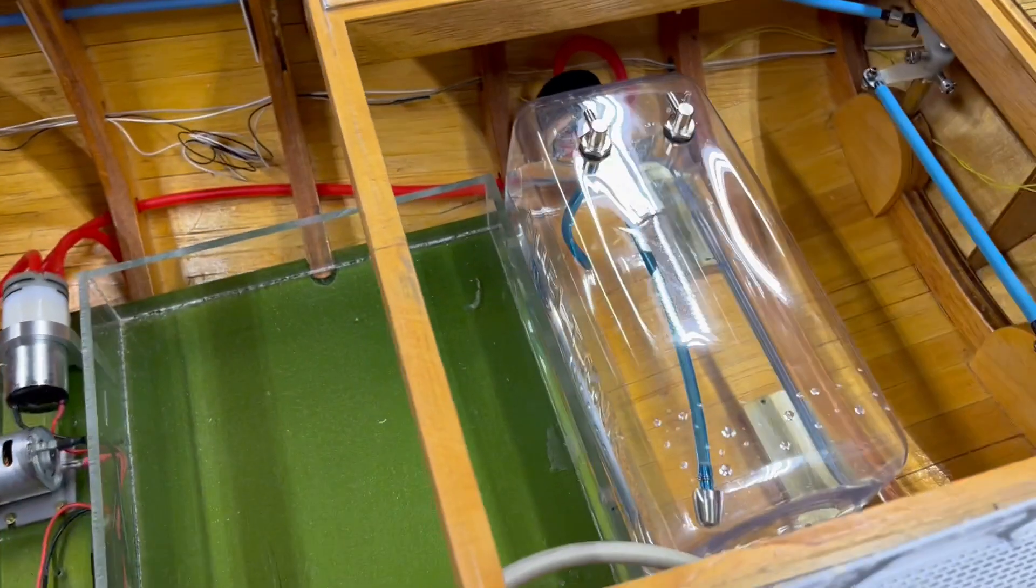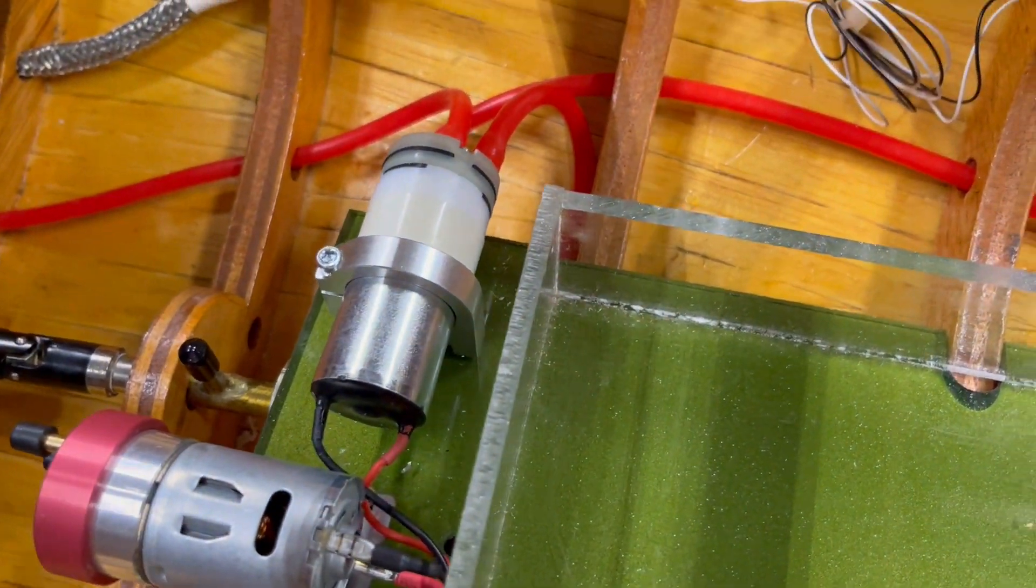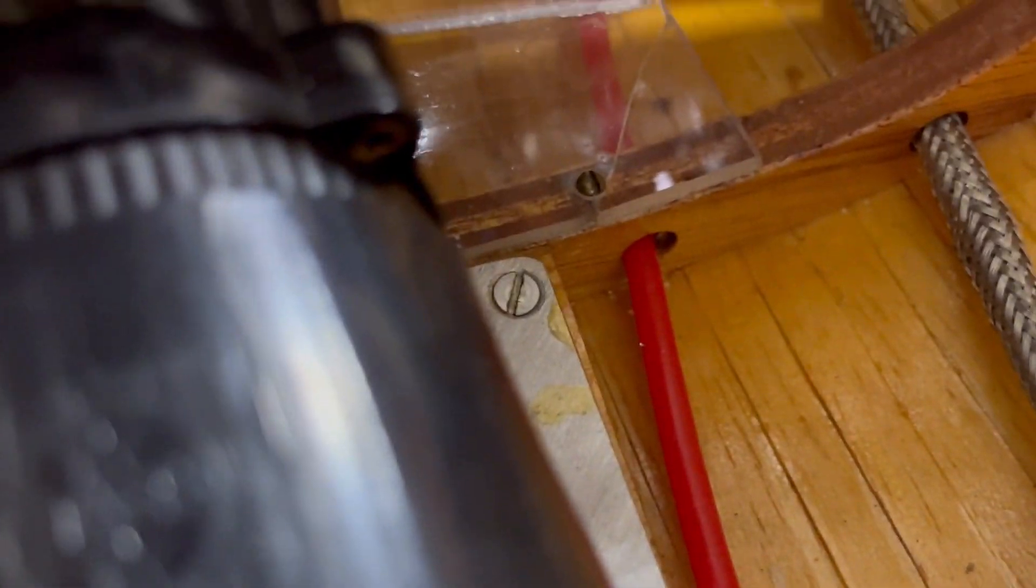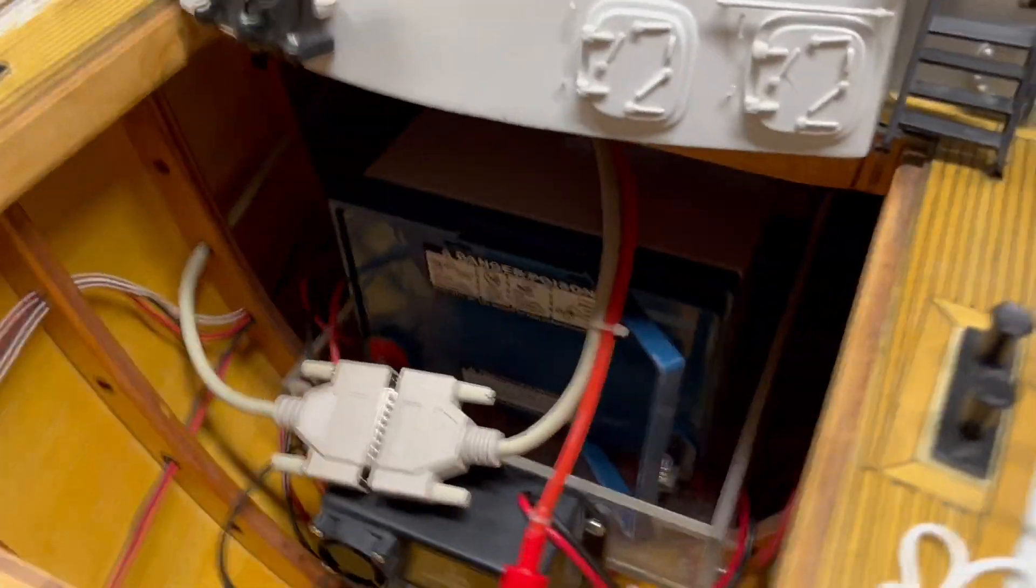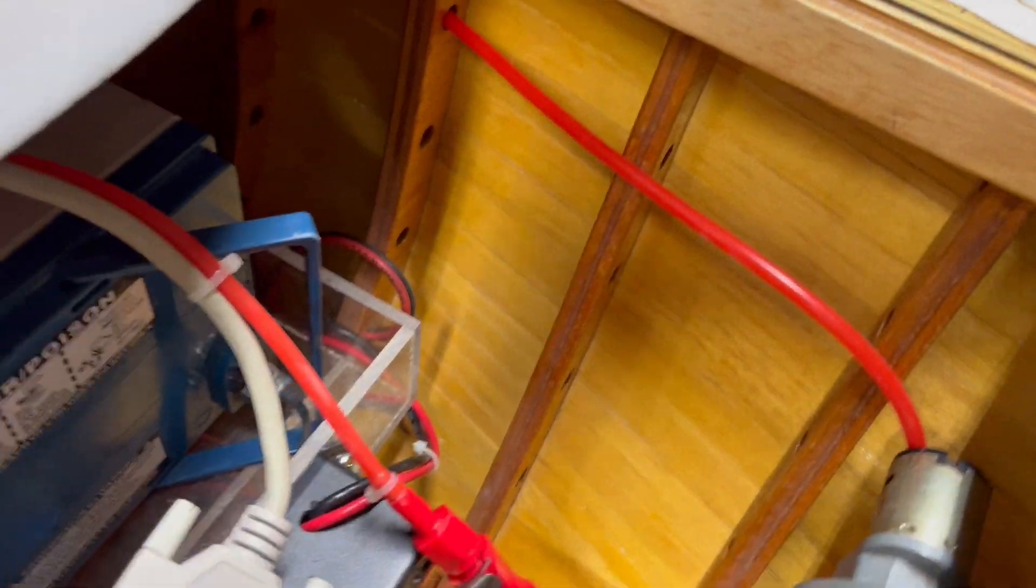So the reservoir connects to the pump, and the pump pushes the water through this red line which runs through the frames of the ship. It works its way around and eventually pops out up here towards the bow.